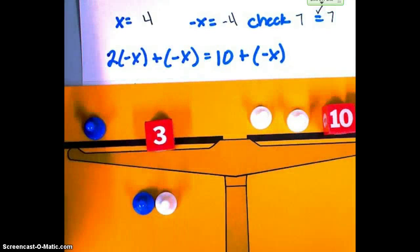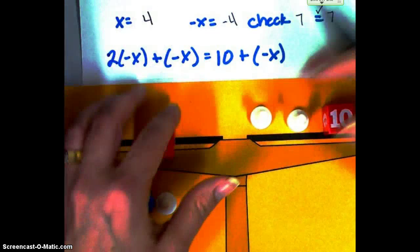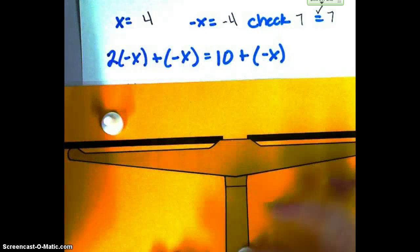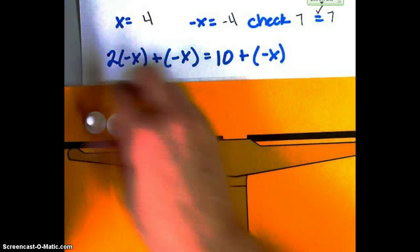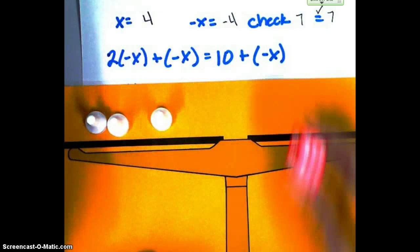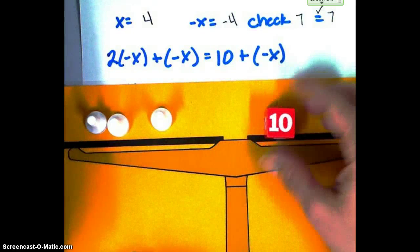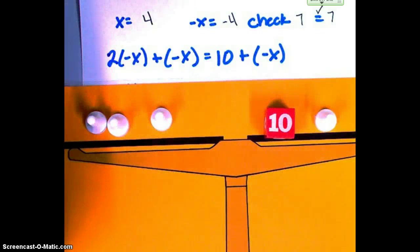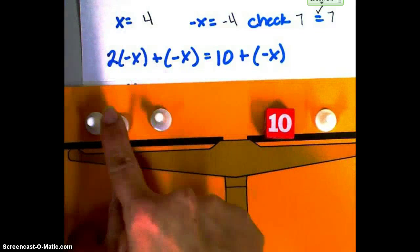Here's my next one. This time, I'm looking at the quantity 2 times negative x. And then I've got another one, negative x. And on this side, I have a 10, and another negative x. Alright, let's make sure I've got this set up right.